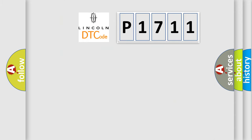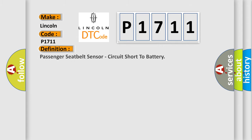The number itself does not make sense to us if we cannot assign information about what it actually expresses. So, what does the diagnostic trouble code P1711 interpret specifically for Lincoln car manufacturers? The basic definition is: Passenger seatbelt sensor, circuit short to battery.